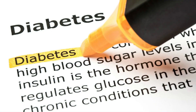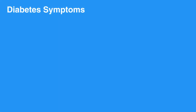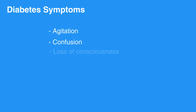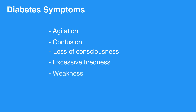Diabetes affects an individual's ability to regulate blood sugar. Fluctuations in blood sugar in either direction can produce symptoms such as agitation, confusion, loss of consciousness, excessive tiredness, weakness, and even seizure-like activity.